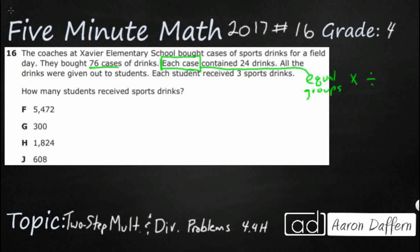Then all of the drinks were given out to the students and each student received three. So we've got another set of equal groups — we're going to multiply or divide. The question is: how many students received sports drinks? Let's see if we can draw some strip diagrams to help us out. First we need to figure out how many drinks there are total. We've got 76 cases and each case is 24 drinks.